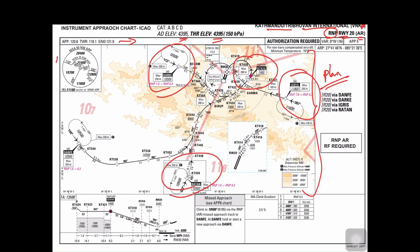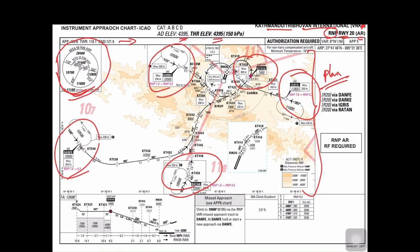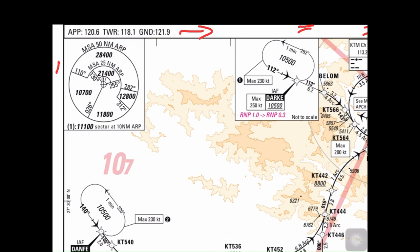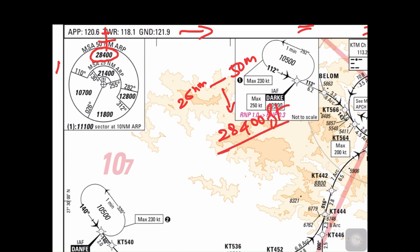Starting with Minimum Safe Altitude: if you are coming from the north of the aerodrome, you should be flying at 28,400 feet when you are between 50 and 25 nautical miles from the aerodrome. This applies when coming from the north, northeast, or northwest of the aerodrome.